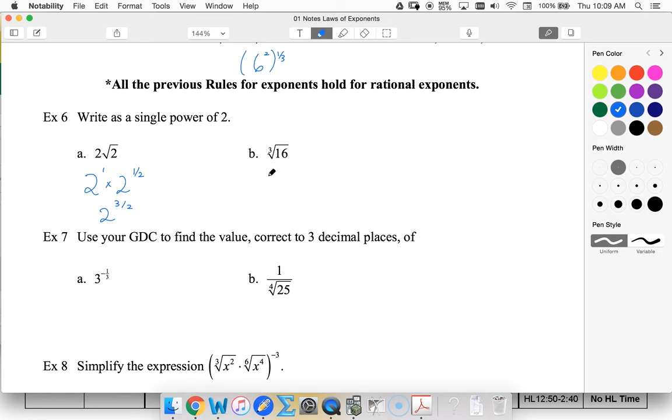Over here, this is going to be 16 to the one-third, but I know 16 is the same as two to the fourth. So the fourth to the one-third is two to the four-thirds.